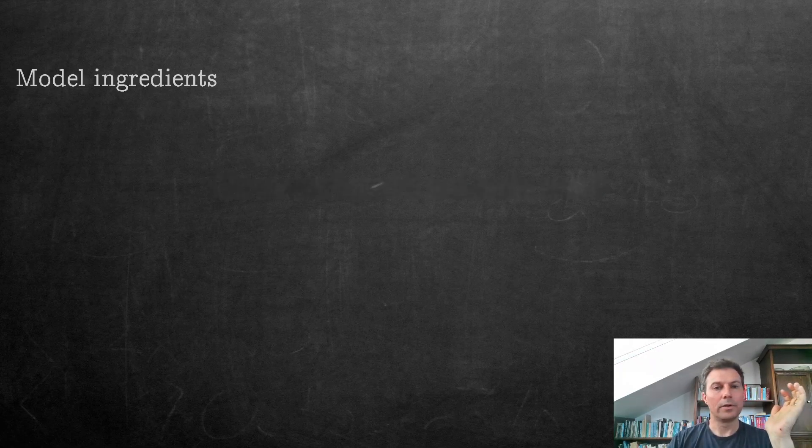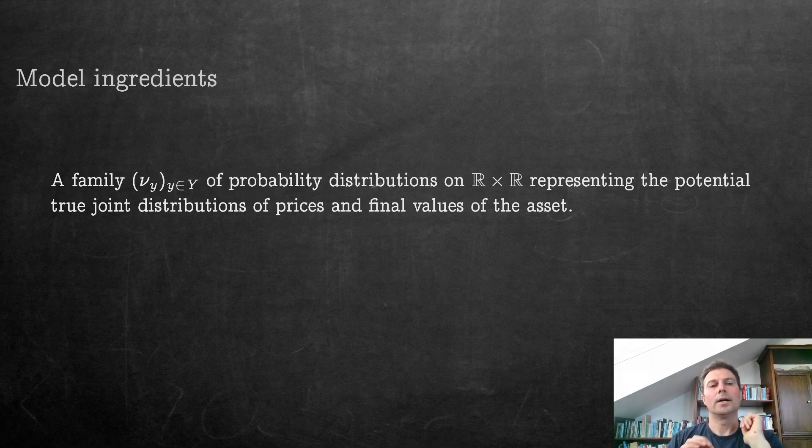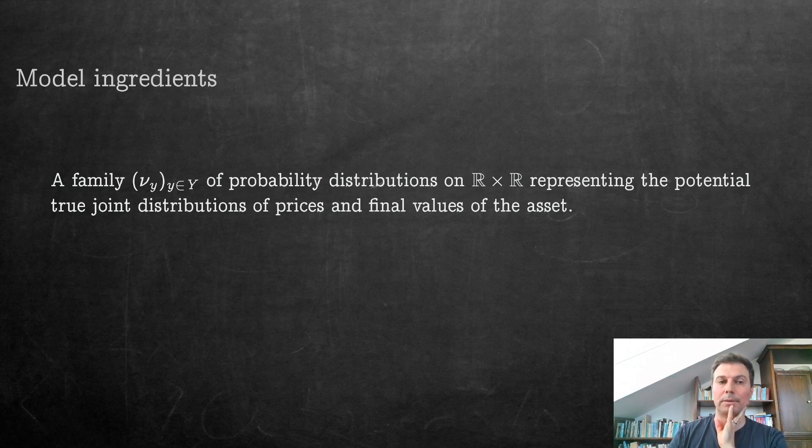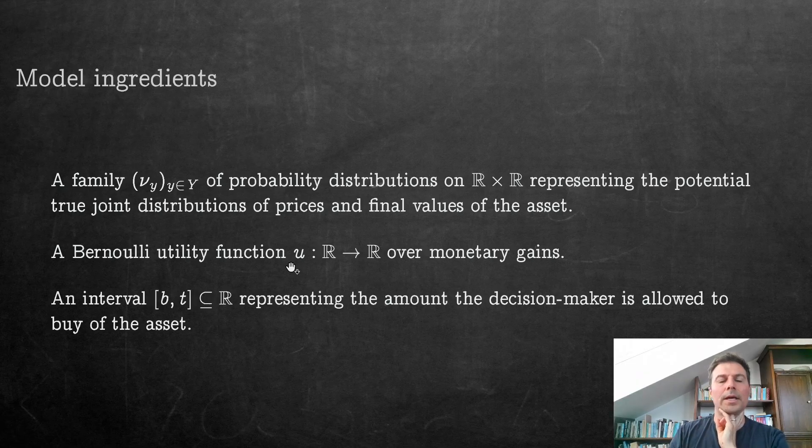Now, in order to give you this theorem clearly, let me tell you what the model is, the full model looks like. Instead of having just two final values, now we have multiple models that the decision maker may have in mind. So we have a family, V_y. So Y is basically an index, and so for every Y you have a different model of the world, and you don't know what the true Y is. So V_y is then a probability distribution on price cross final value, so it's a joint distribution about current prices or immediate prices and eventual final values, representing the potential joint distribution of price and final values of the asset. And you have a Bernoulli utility function with which you evaluate money, and you have an interval that has a lower and upper bound. The lower bound is usually considered negative and the upper bound positive, representing the amount the decision maker is allowed to buy of the asset.